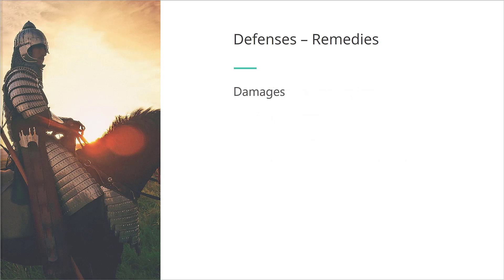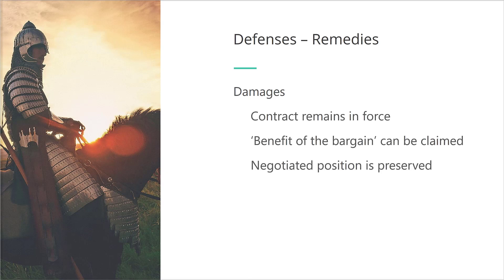The second option in terms of remedies is damages, that is financial compensation. If that remedy is chosen, the contract remains in force. The party that was harmed can claim damages consisting of the benefit of the bargain — that is the difference in value between what was promised as part of the contract and the value of what the party agreed to provide in return for it.